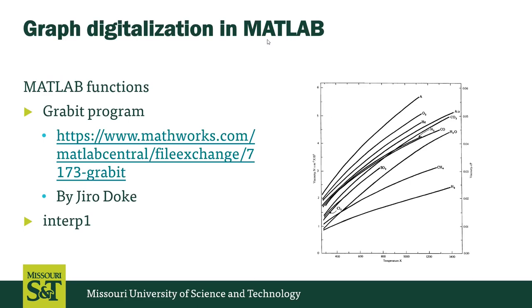In our case, we are going to use MATLAB to do that. I found a really useful code that was already programmed by GiroDoc, which you can find at this link. The tool is called Gravit. Gravit is basically a code that runs in MATLAB, and when you run it you can manually extract data from any plot you want to digitalize. We are also going to explore the MATLAB function called Interp1, Interpolation 1D, which helps us fit the data properly after digitalization.